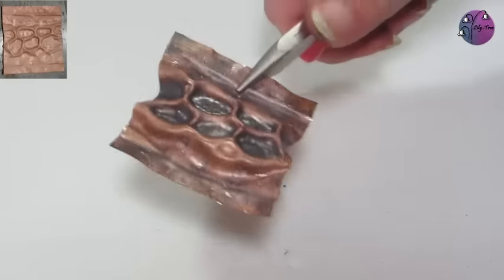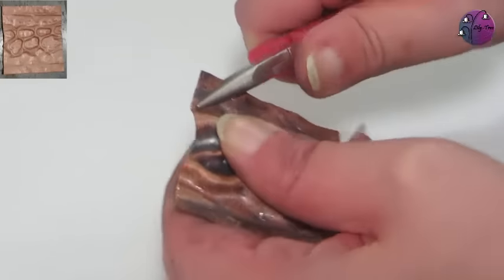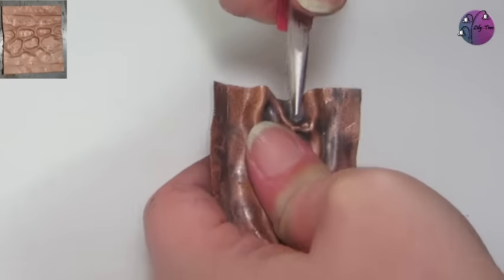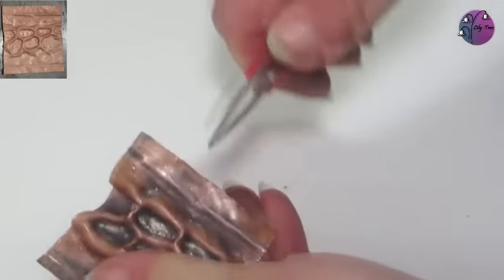You might find some of the creases are a little bit kind of bent over. But you can just use your pliers to ease those around to flatten out the edges as well.